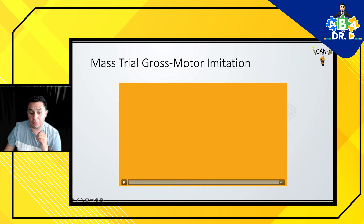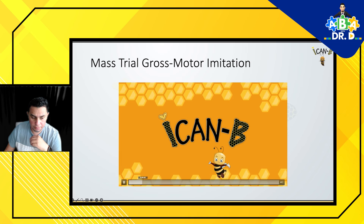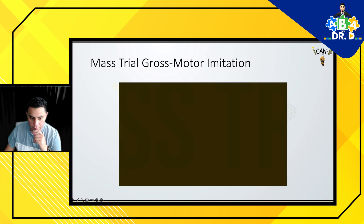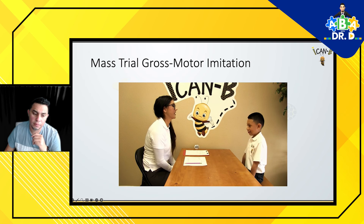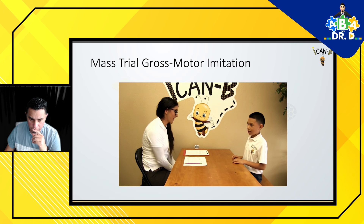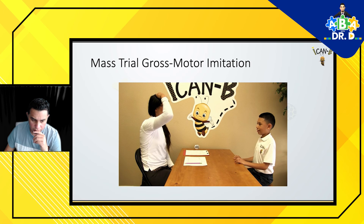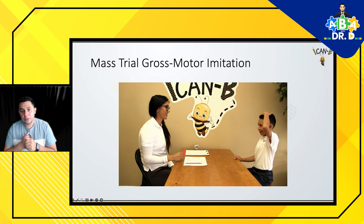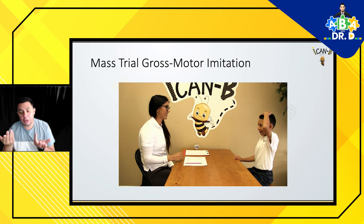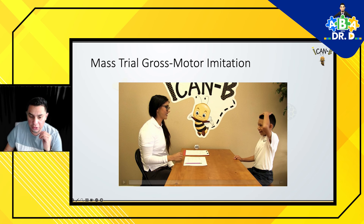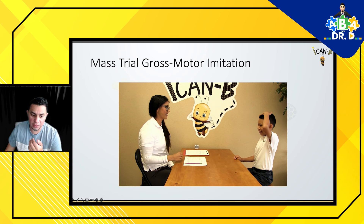We're going to watch another example for gross motor imitation. [Video plays] Joseph, we're going to play a little bit of a game. Are you ready? So you have to concentrate. Joseph, do this. The instruction for this particular video is 'do this.' That's the instruction we're looking for in the next coming trials. I want you to track whether the instructor is providing praise or reinforcement after the response. [Video continues] Good job. That's so good. Are you ready? Look at me. Do this. Give me a high five. Nice job.